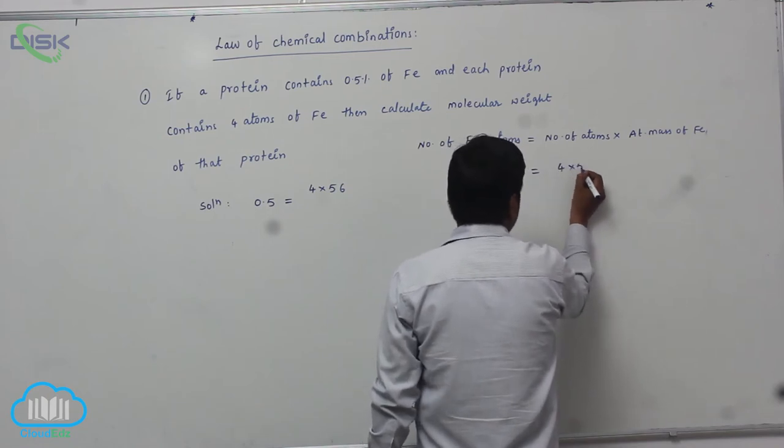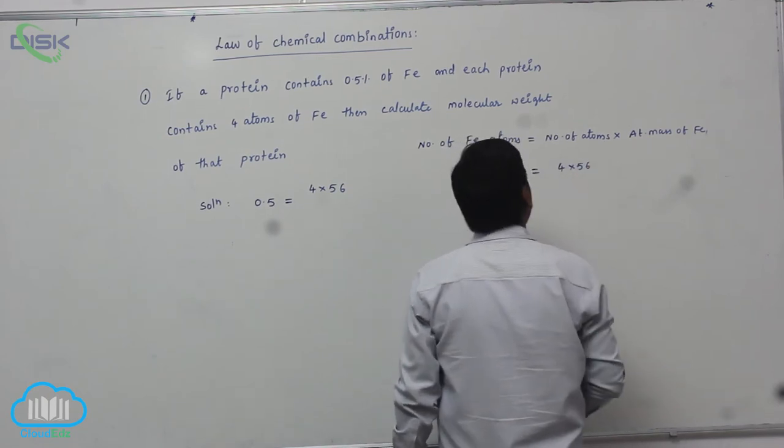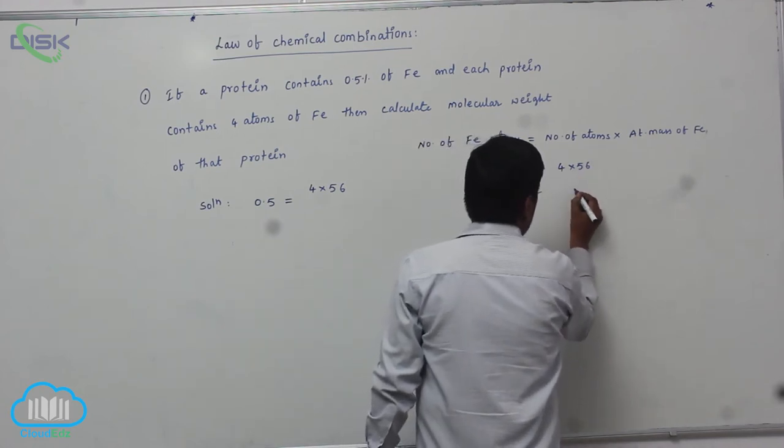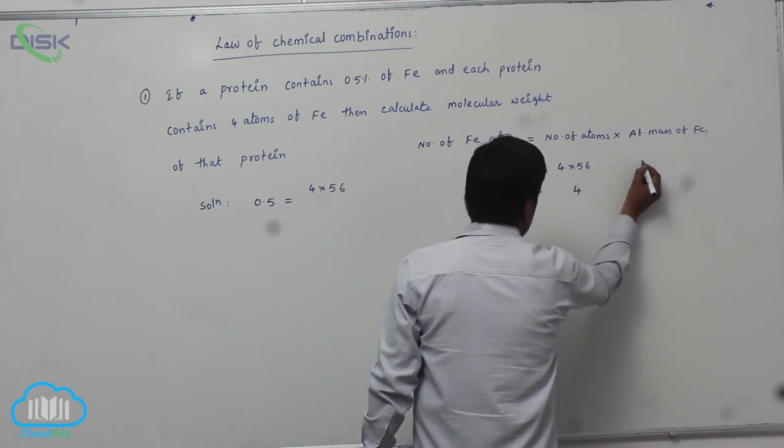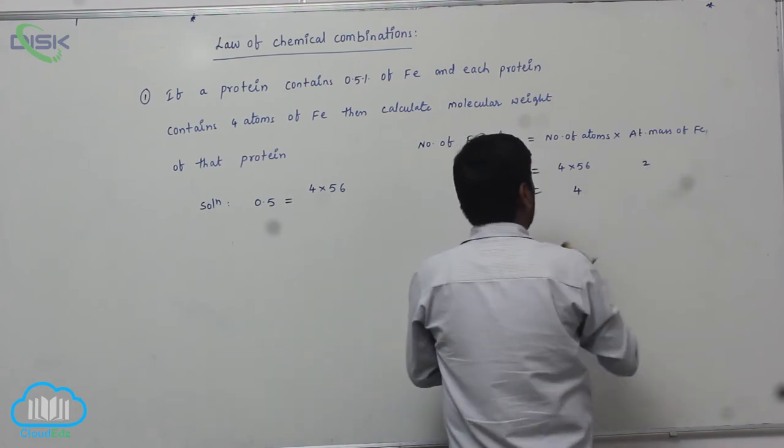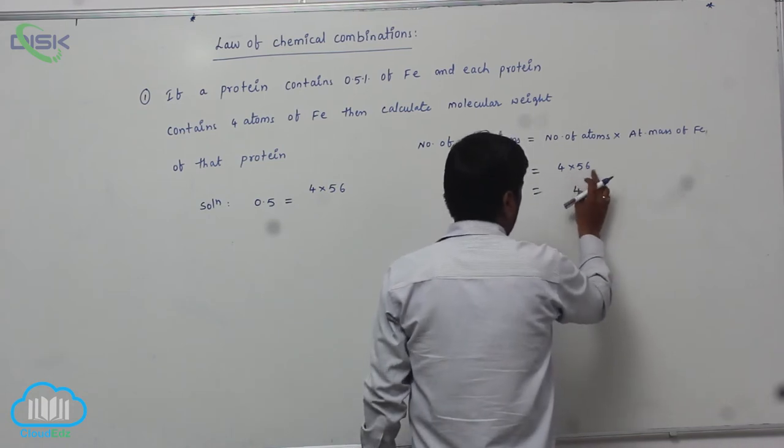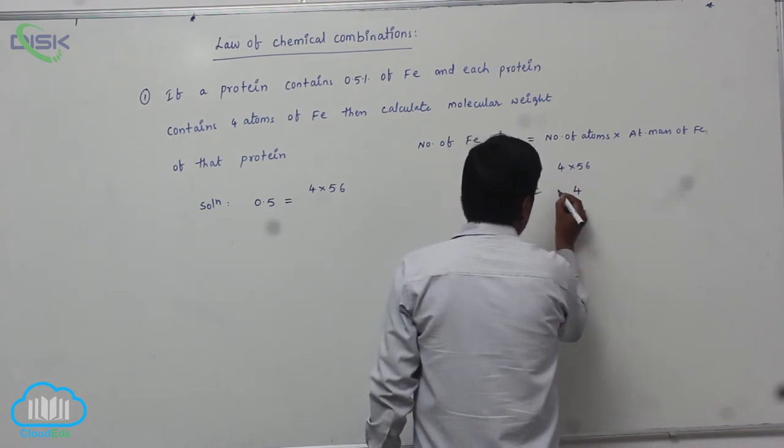4 into 56. So 4 times 6 is 24, carry the 2. Therefore 4 times 5 is 20, 20 plus 2 is 22, giving 224.